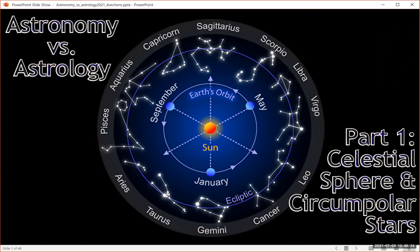This is part one in a series of videos that talk about astronomy versus astrology. To understand the difference between astronomy and astrology and how things fit together, we need to understand how we view the sky. So in this video we're going to talk about the celestial sphere and the idea of circumpolar stars.